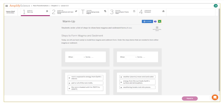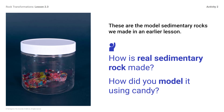Here's what your student screen looks like for this part of the lesson. These are the model sedimentary rocks we made in an earlier lesson. How is real sedimentary rock made? Sediment undergoes compaction and cementation. How did you model it using candy? We put pressure on the crushed candy sediment in a cup.